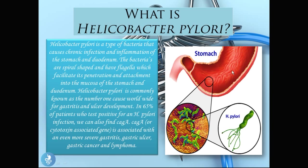You can see this picture on the right. We have the stomach and the innermost layer of the stomach is called the mucosa. This is a microscopic image of what the bacteria look like, and you can see their tails or flagella which facilitate their attachment into the stomach lining. That is why these bacteria are so dangerous — they are able to penetrate into the mucosa and attach themselves there.